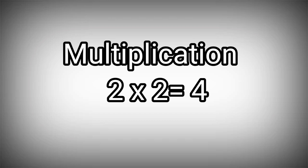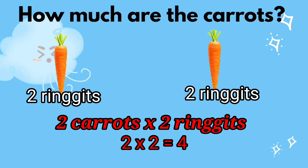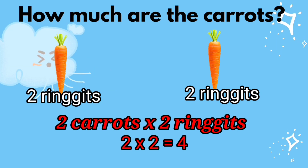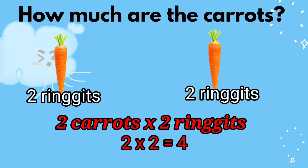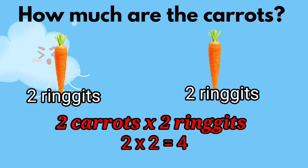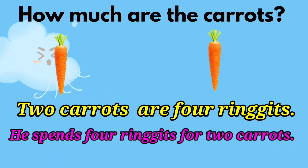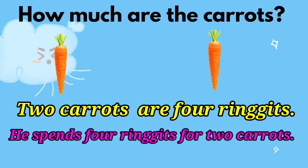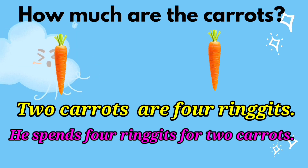Multiplication: 2 times 2 is 4. How much are the carrots? One carrot is 2 ringgits. 2 carrots times 2 ringgits — 2 times 2 is 4. Two carrots are 4 ringgits. He spends 4 ringgits for 2 carrots.